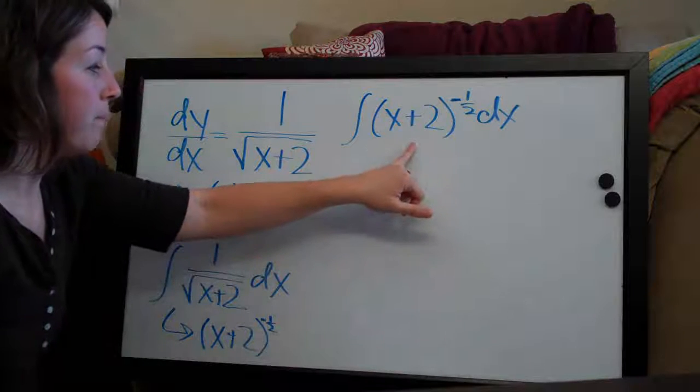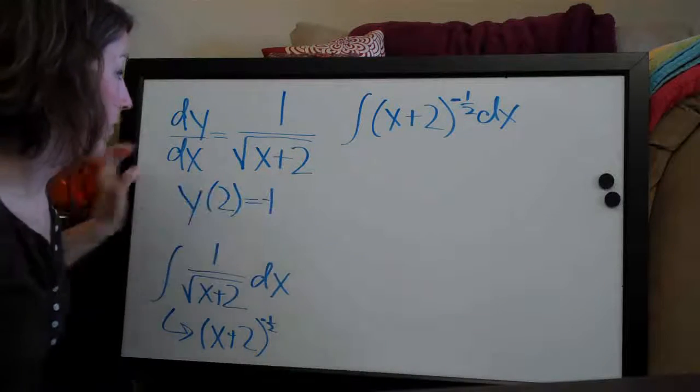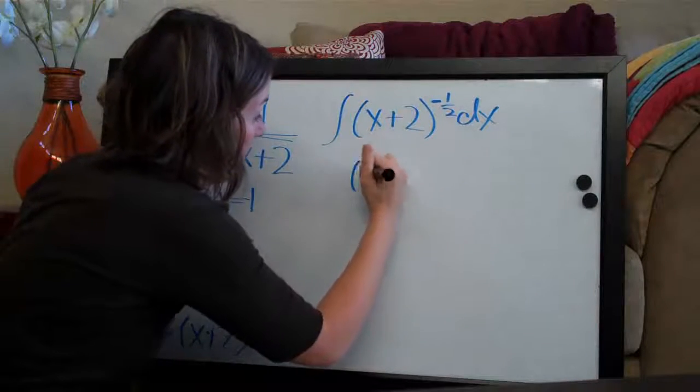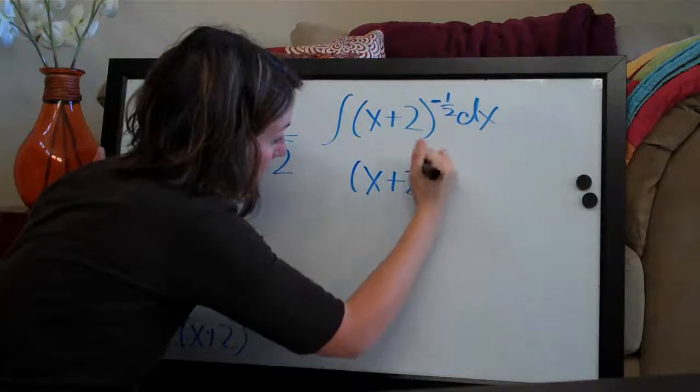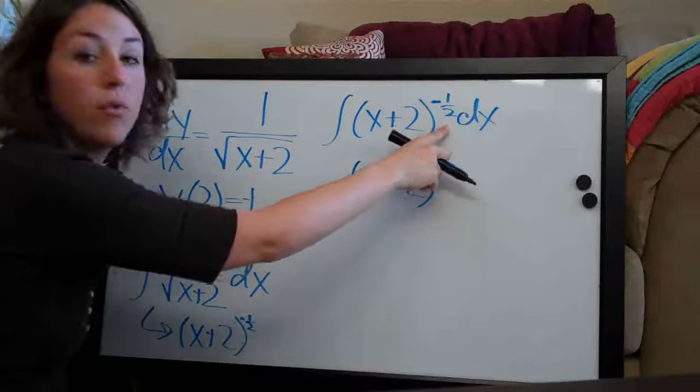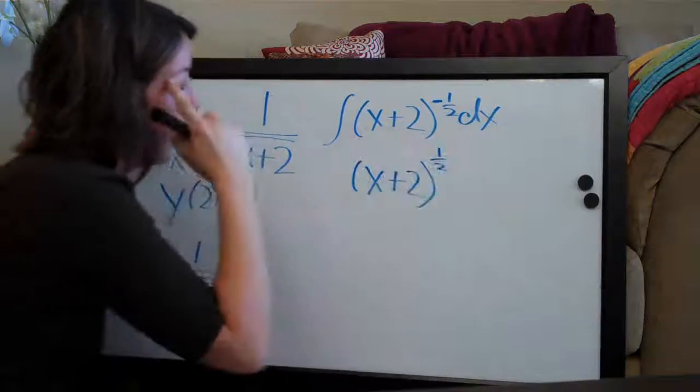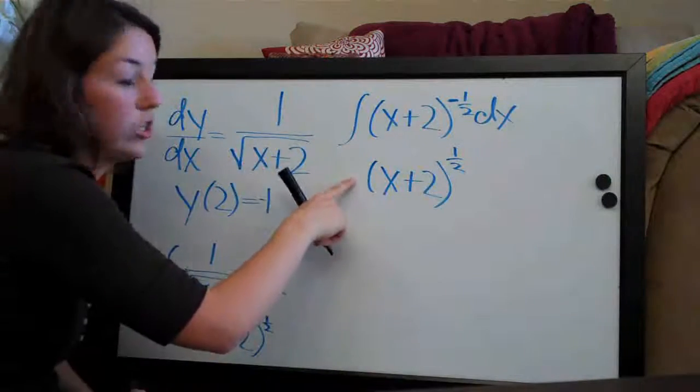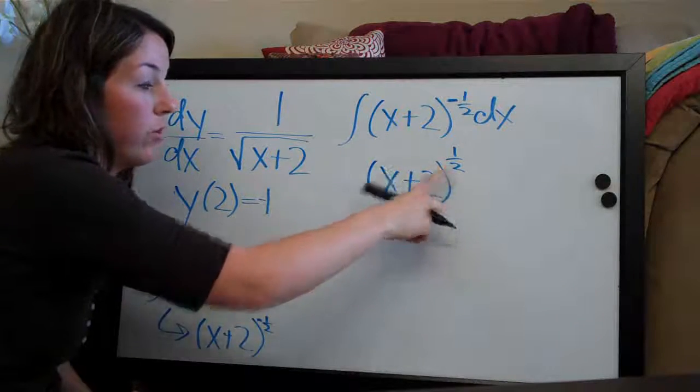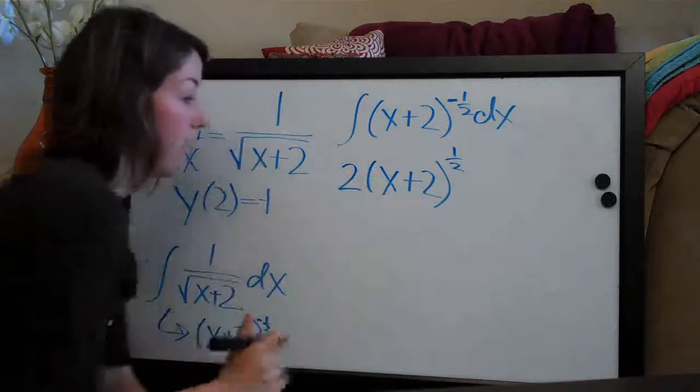So now that we've done that, we can more easily take the integral of this function. So we will say x plus 2 here, we add 1 to the exponent, so negative 1 half plus 1 is positive 1 half, and then we divide the coefficient, which is an implied 1 here, by the new exponent, which is 1 half. 1 divided by 1 half is 2, so we have 2 out here.